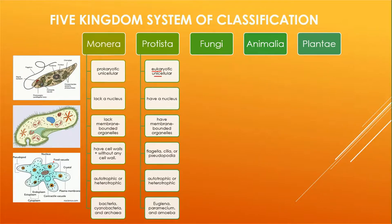Examples of Protista include Euglena, Paramecium, and Amoeba. Here you can see Euglena uses flagella for movement, Paramecium uses cilia — the small hair-like structures visible here — and Amoeba uses pseudopodia for its movement.